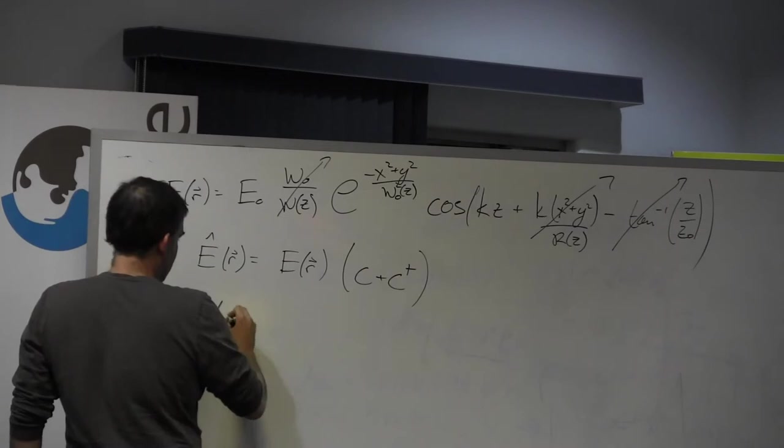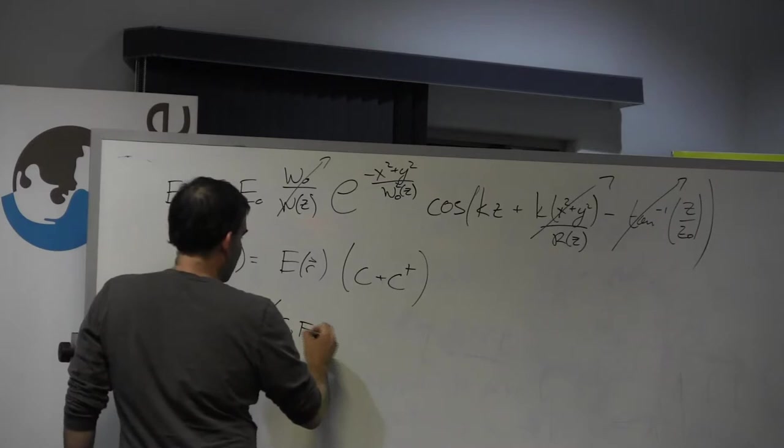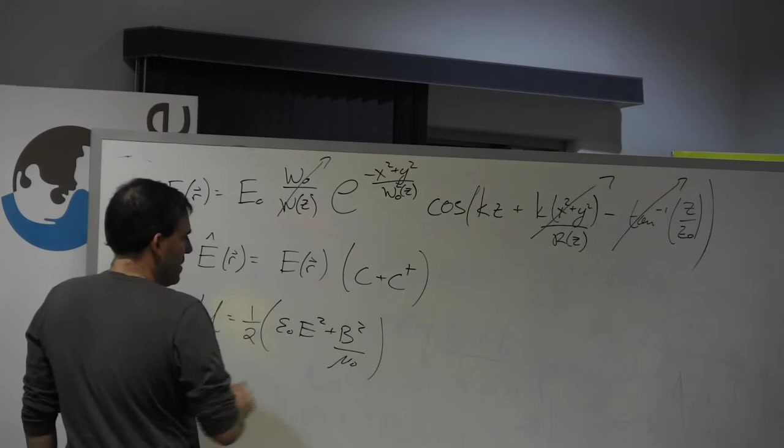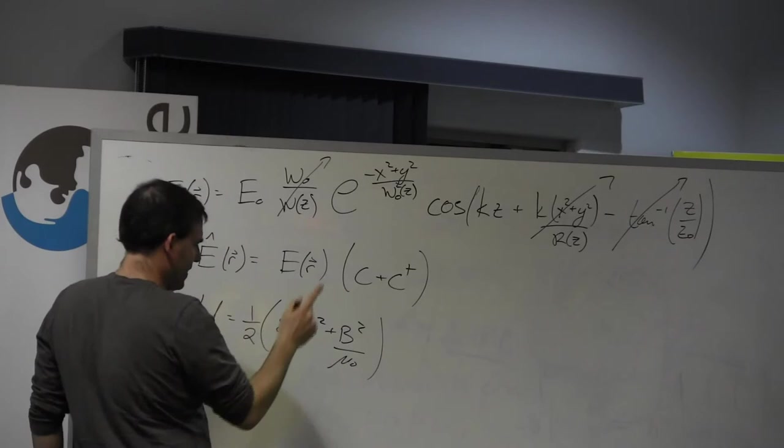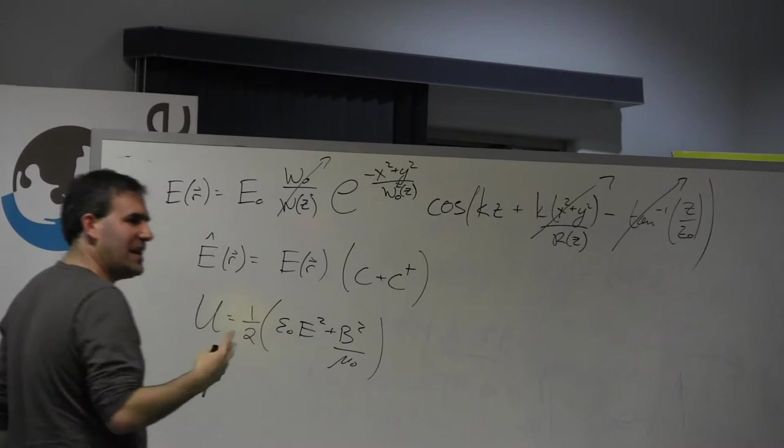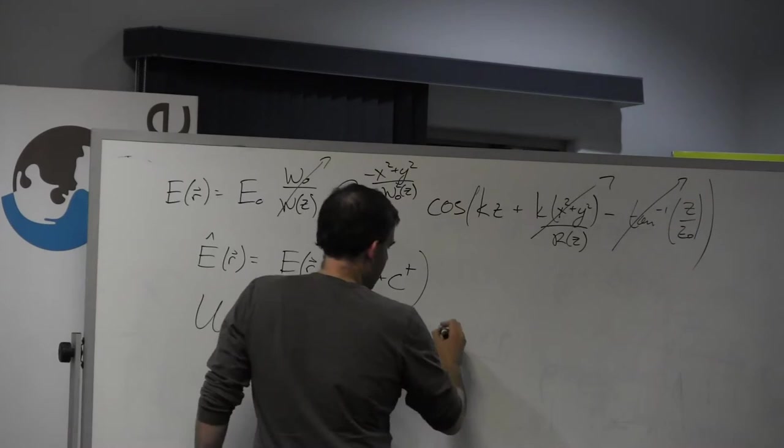I know that the electromagnetic mode density, sorry, the electromagnetic energy density from classical E&M looks like this. I know how to get the magnetic field from the electric field, but we're just going to ignore that. We're going to just recall the fact that a typical electromagnetic wave stores half of its energy in the electric field and half in the magnetic field.